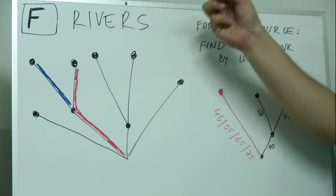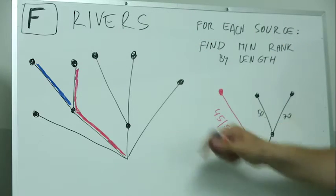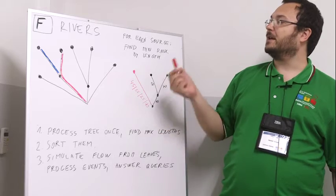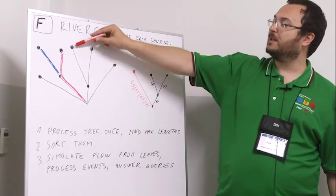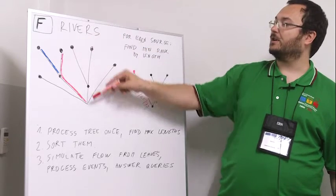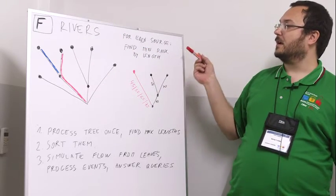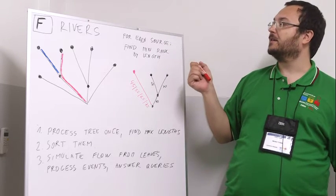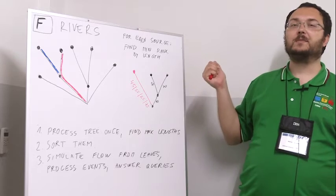For each of the sources we should consider all possible ways how to name the rivers when they meet and to find such a naming where this particular river is at the smallest possible rank when all the rivers are ordered by length. So what does this mean?